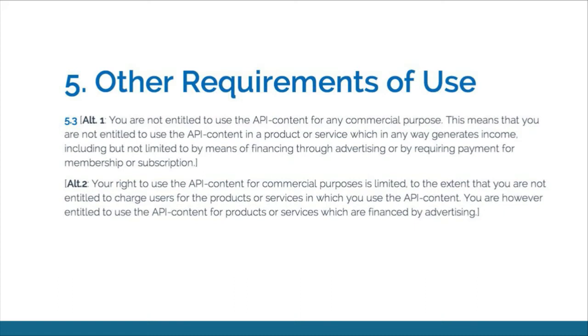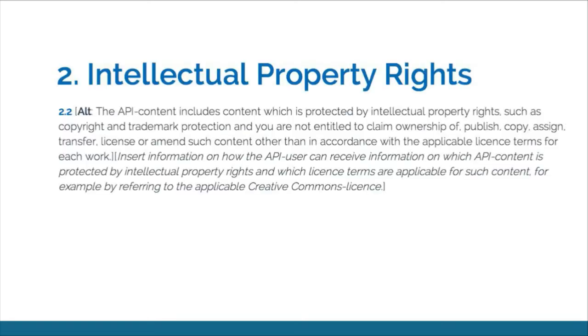An example is a section with Alternative One and Alternative Two regarding commercial purposes — what that actually means to the API publisher or provider using the license. Depending on how you want to structure this for your API, you choose one alternative and delete the other. When talking about the different selections to be made, we've taken two different roads: one being mandatory laws — what needs to be in a license to fulfill mandatory laws — and when it comes to an API license, there's actually not that much provided in mandatory law that you need to include in the text.